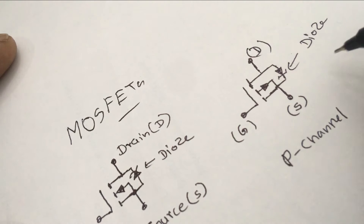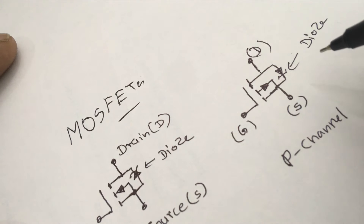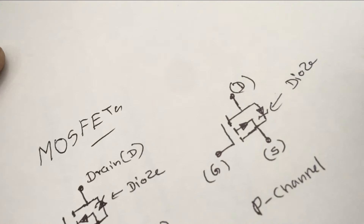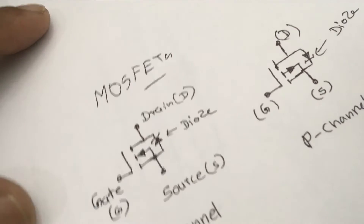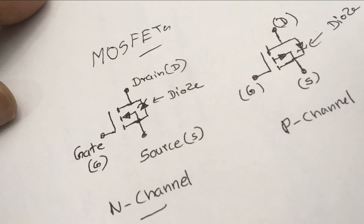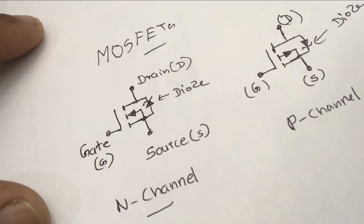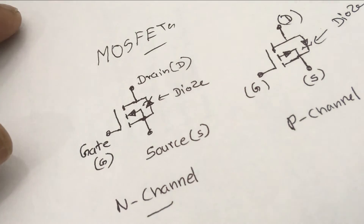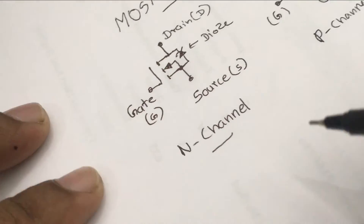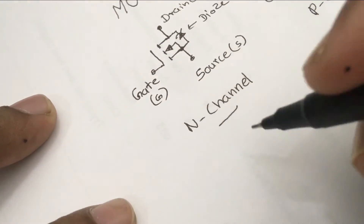Understanding the voltage characteristics is crucial for designing circuits that employ P-channel MOSFETs, particularly in complementary metal oxide semiconductor (CMOS) technology, where both P-channel and N-channel MOSFETs work together in various applications across digital and analog electronics.